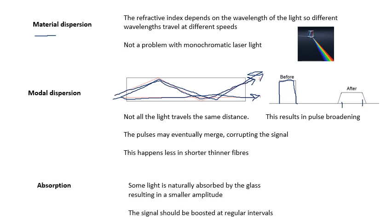And then absorption. Some light is naturally absorbed by the glass, resulting in a smaller amplitude. So what we need to do is boost the signal at regular intervals, or it will just get, the amplitude will just get smaller and smaller. So it needs boosting every now and then.